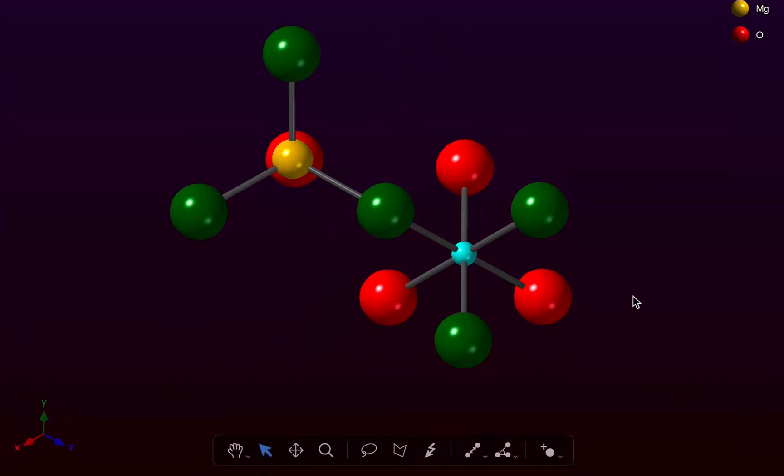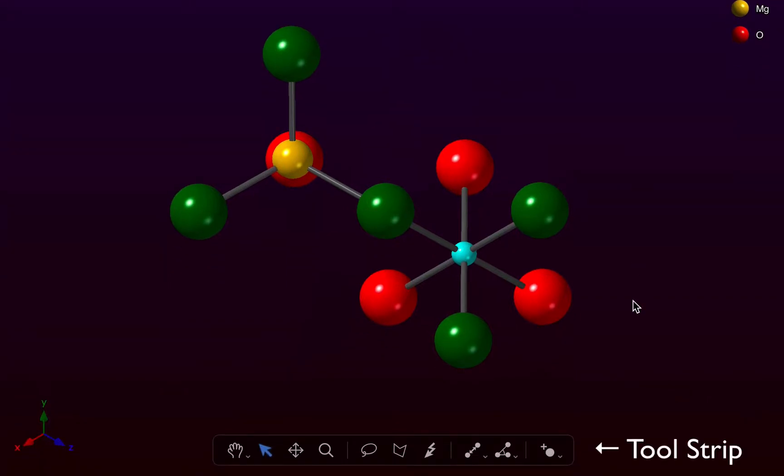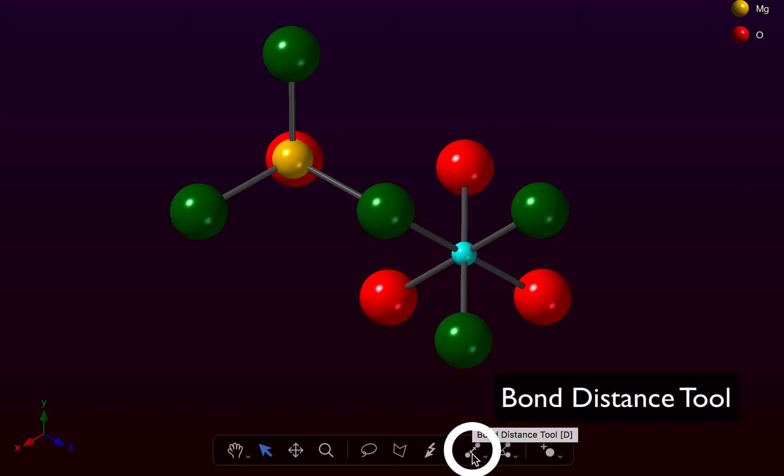If we move down to the tool strip at the bottom of the screen, we have a range of tools for selection and measurement. The bond distance tool is available here, and if we select that,